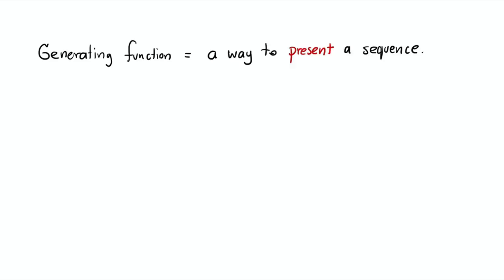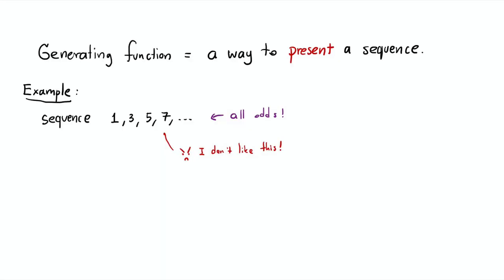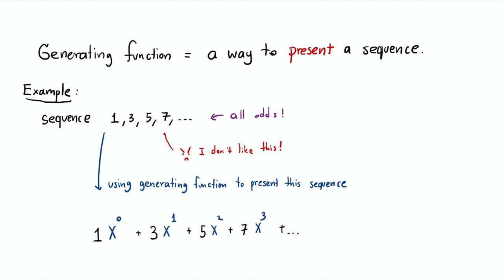So let's start with the basics. What is a generating function? The way I understand it, a generating function is a way to encode or present a sequence of numbers. So let's say you have a sequence 1, 3, 5, 7, 9 — all odd numbers. You don't want to just write 1, 3, 5, 7, 9. You want to present it in a new way using a generating function, where you use numbers in the sequence as coefficients in front of x to the n.